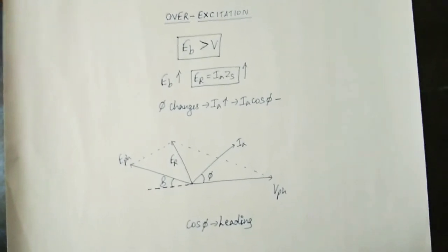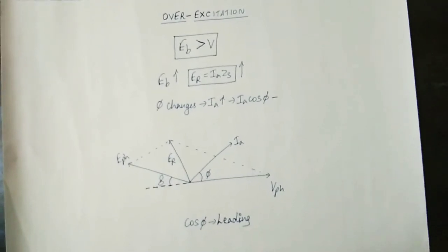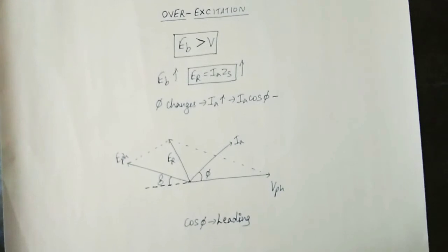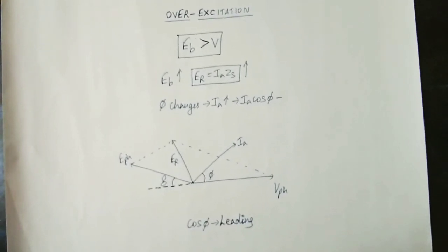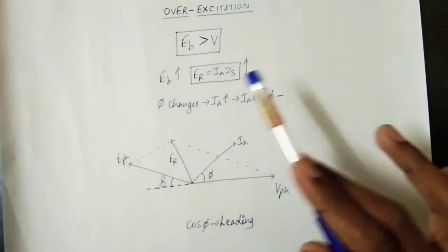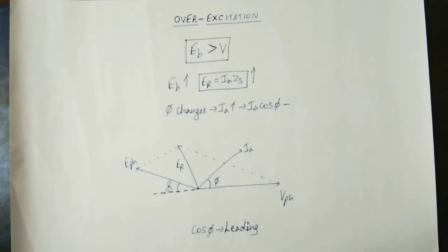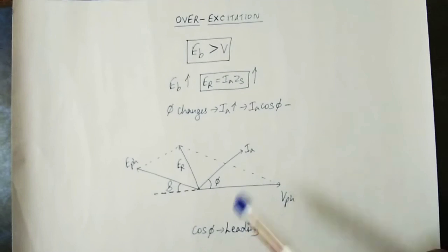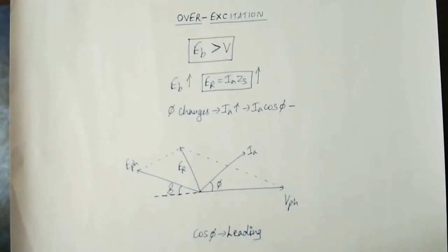If you are looking at the increase in EB, we will talk about the increase in ER. What about IA into ZS? IA into ZS is the drop across the stator side. In the stator part, we talk about current and impedance — ZS, stator, and impedance. This is constant. So IA into ZS load increases, and that is why IA·ZS increases.